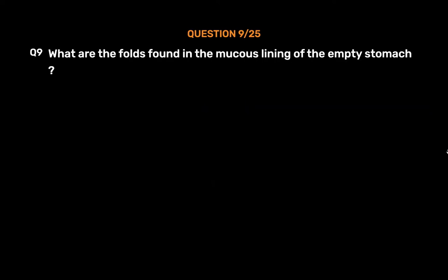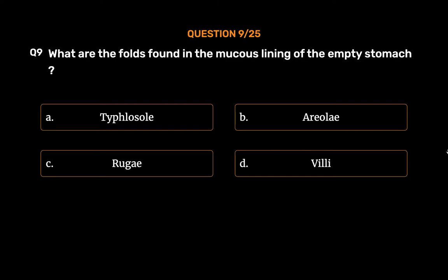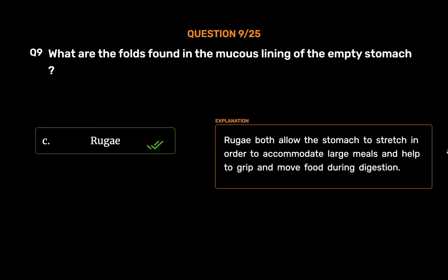Question No. 9: What are the folds found in the mucus lining of the empty stomach? Option A: Typhlosoli, Option B: Aerial I, Option C: Rugae, Option D: Villi. The correct answer is Option C, Rugae. Rugae both allow the stomach to stretch in order to accommodate large meals and help to grip and move food during digestion.